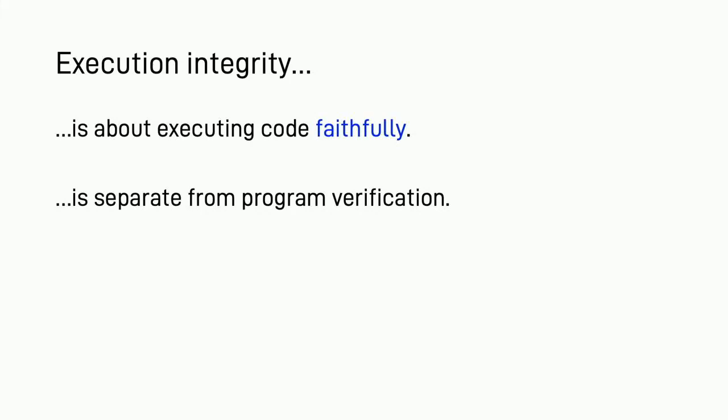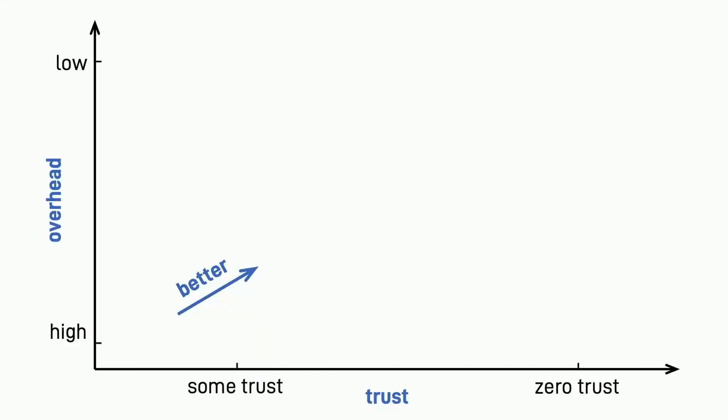More generally, this topic is called execution integrity. Execution integrity studies how to ensure a piece of code executes as written. This is separate from but complementary to program verification, which is about writing bug-free code. You can imagine that even if an application is bug-free, it can still produce wrong results in an untrusted environment. Execution integrity is a broad topic that has been examined by multiple communities. I will map this work in a high-level trade-off space, where the x-axis is how much trust one puts in the remote servers, and the y-axis is the performance overhead — how many resources you have to pay to get this verifiability.